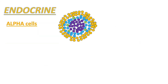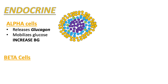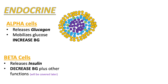Looking at the specific cells of the islets: the alpha cells' main function is to release glucagon. Glucagon is released when blood glucose levels are low — for example, when fasting — and helps to mobilize glucose and increase blood glucose levels. The beta cells function to release insulin. Insulin is released when blood glucose levels are high — for example, after eating — and helps to bring down blood glucose levels. Insulin has other functions which will be covered later. The delta cells release a hormone called somatostatin.